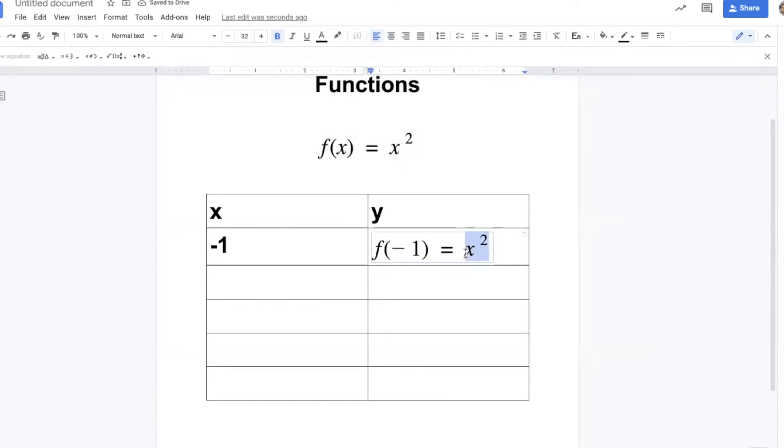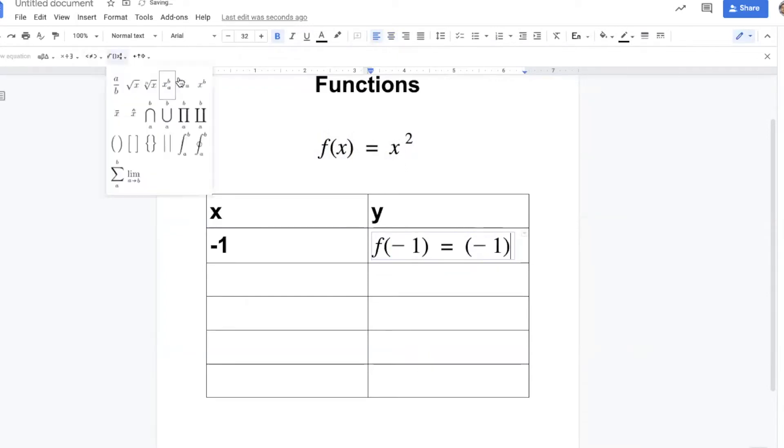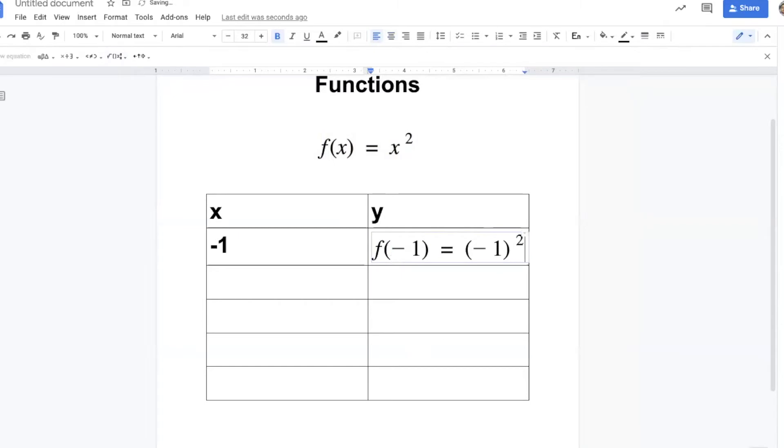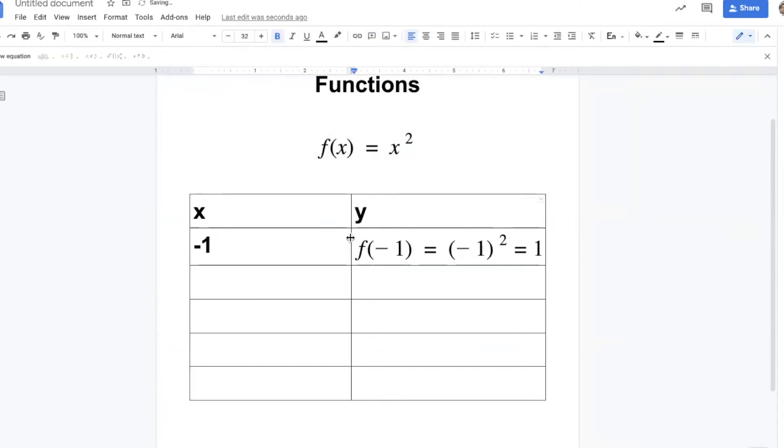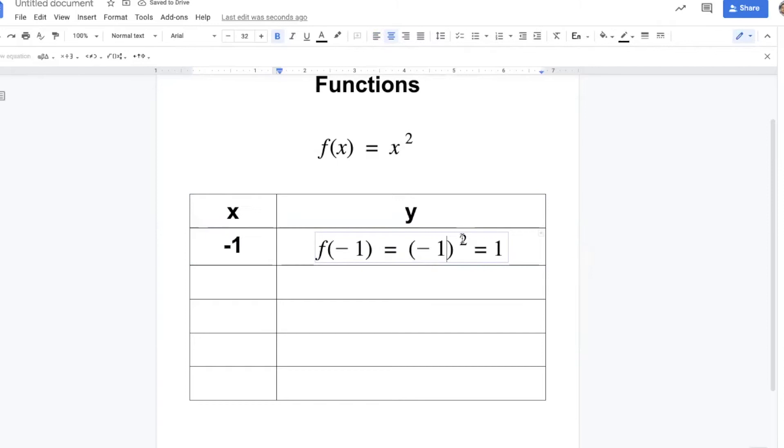Now, what if x is negative 1, what is y? f when x is negative 1 equals negative one power 2, which is positive 1. Please respect the negative - this power 2 is for the negative and the 1, so negative times negative is positive.